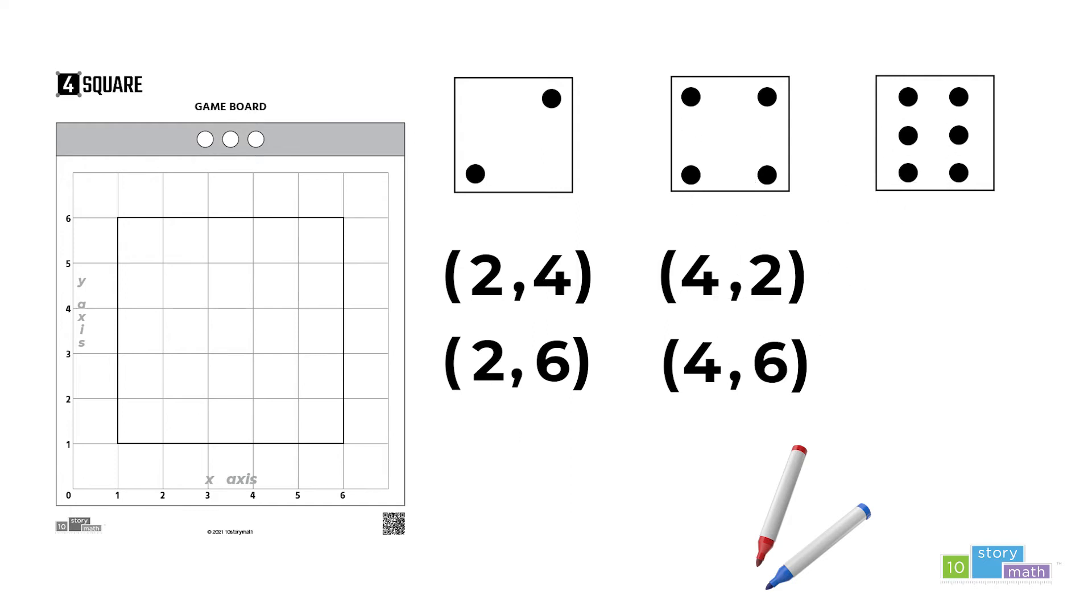And using the six in the X position, we can make the points (6,2) and (6,4). The red team will need to choose one of these ordered pairs.